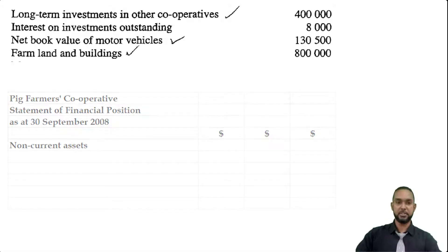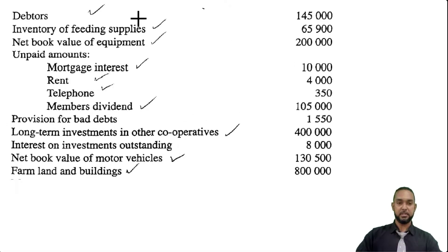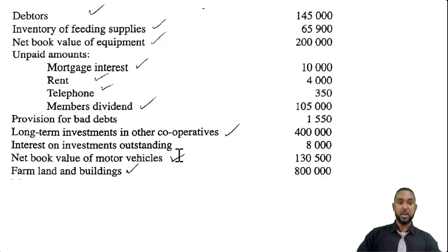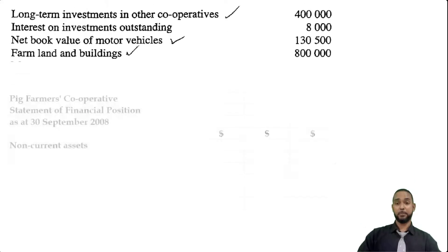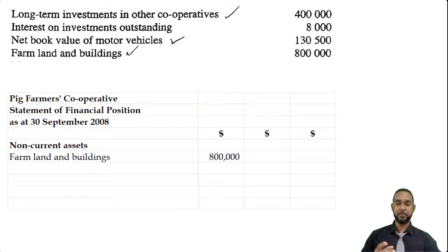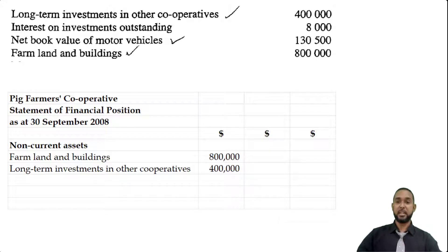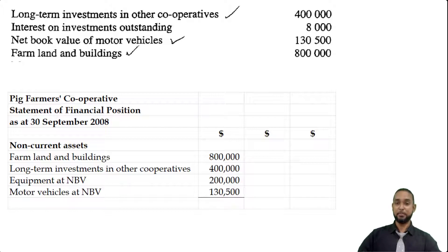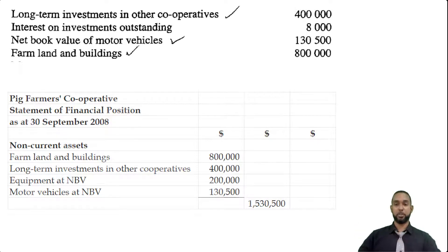Let's start off with the non-current assets. So we have debtors, inventory of feeding supplies, net book value of equipment — that's 200,000. But we also have long-term investments in other cooperatives, net book value of motor vehicles, and farmland and buildings. I'm going to put the farmland and buildings first because that's the most permanent, followed by the investments in other cooperatives, then the equipment, and then the motor vehicles. I'll take a subtotal here. If you disagree with the order, let me know in the comment section below.